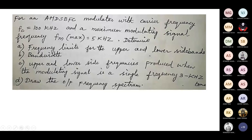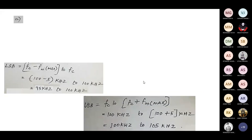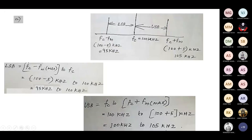Also find the upper and lower side frequencies produced when the modulating signal is a single tone frequency of 3 kilohertz, and then draw the spectrum comprising both sidebands with respect to both modulating frequencies. The lower side frequency is 95 kilohertz (Fc minus FM) and the upper side frequency is 105 kilohertz (Fc plus FM). Draw the spectrum mentioning the carrier frequency, upper sideband, and lower sideband.